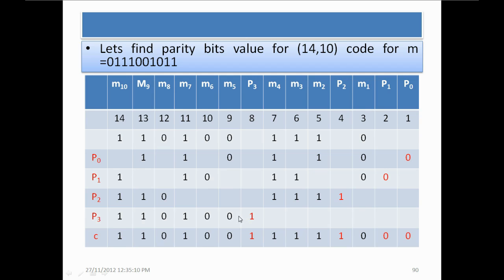For P3, starting from bit position 8, we add positions 8 through 14 — values 0, 0, 1, 1, 1, 1 — which is an odd number of ones, so parity bit P3 is 1. The final code word is 1, 1, 0, 1, 0, 0, 1, 1, 1, 1, 1, 0, 0, 0. As you can see, the parity bits are interspersed among the message bits — that is why this is called non-systematic Hamming code.